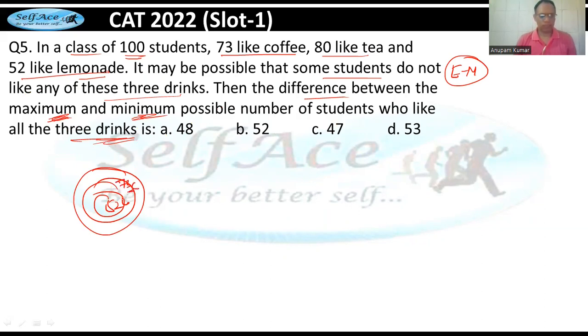Maximum jo hai this can be 52. So maximum value possible is 52. You can say halaki overlapping karke bhi isko kar sakte hain inko zero zero karke, that is also possible. But you will get ki 52 is maximum. Lemonade to be maximum possible.